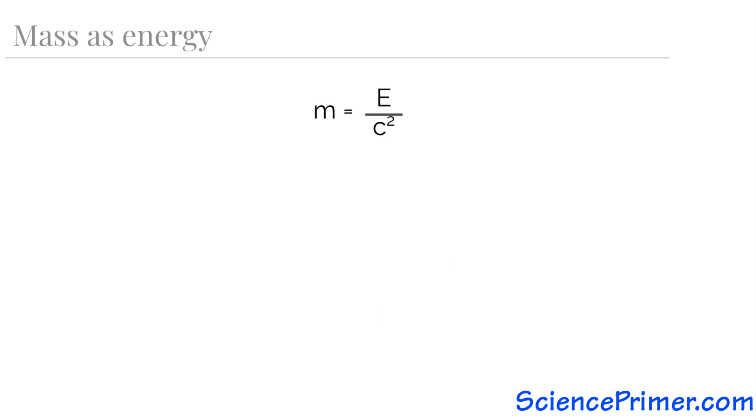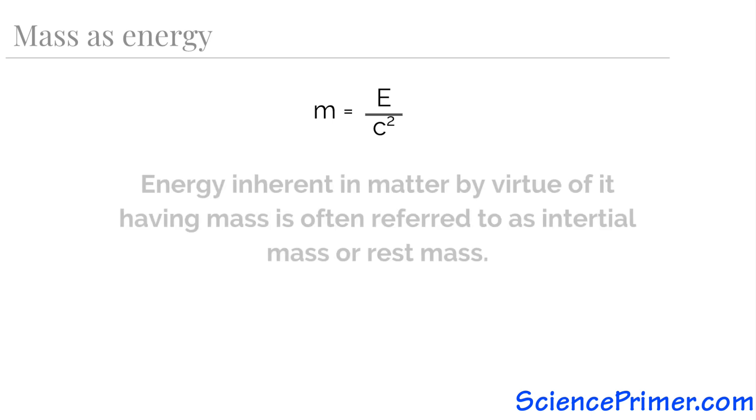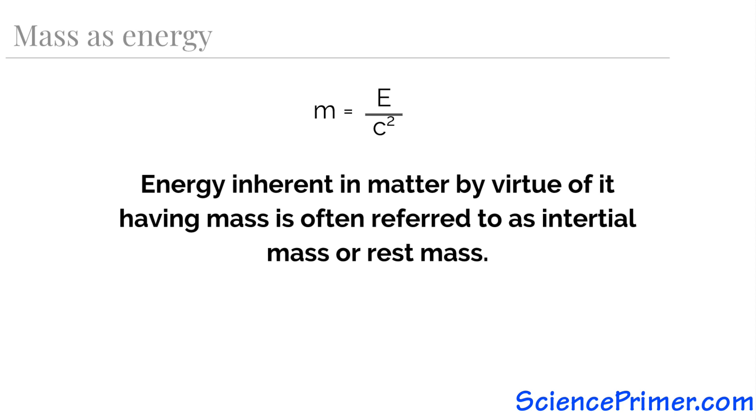An object has energy in it by virtue of having mass. This is not the only type of energy an object can have, and because of this, the energy an object has by virtue of it containing mass is sometimes referred to as inertial mass, or rest mass. Thinking in terms of inertial mass is helpful as a learning tool by connecting the concepts of inertia and mass, but once you make this connection, you will realize that it is not accurate. In fact, the term inertial mass is redundant.